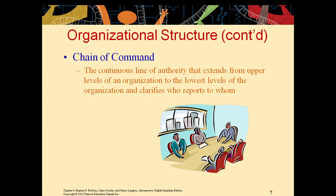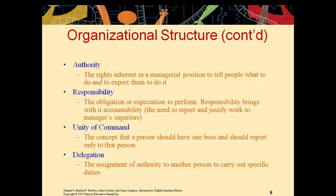Chain of command, as we have understood, is where you have very clearly defined lines of reporting between managers and subordinates, which form the base for organization structure. It is a continuous line of authority that extends from upper levels of an organization to the lowest levels, clarifying who reports to whom. Always twinning with chain of command is unity of command, which means one reportee should report to only one manager.